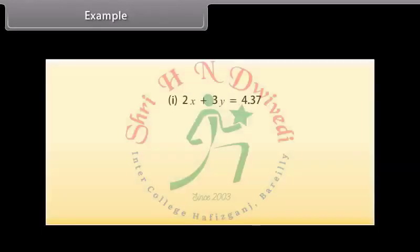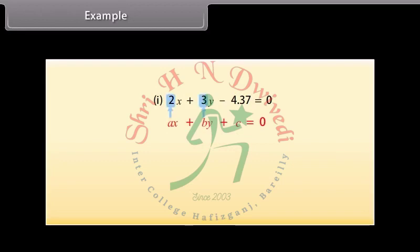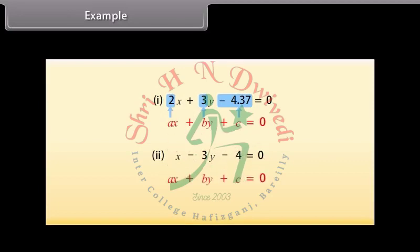Example. Let us now write these equations in the form AX plus BY plus C is equal to 0. The first equation can be written as 2X plus 3Y minus 4.37 is equal to 0. Here A is equal to 2, B is equal to 3, and C is equal to minus 4.37. The second equation can be written as X minus 3Y minus 4 is equal to 0. Here A is equal to 1, B is equal to minus 3, and C is equal to minus 4.